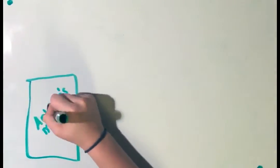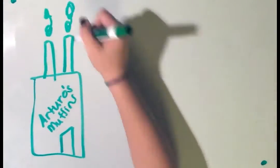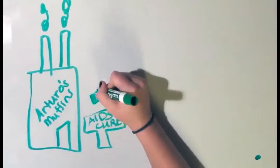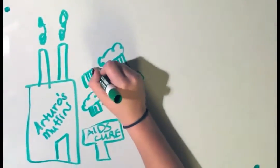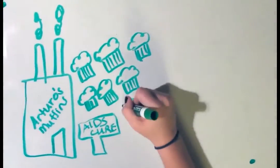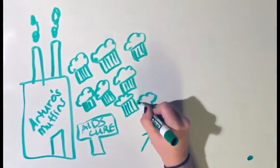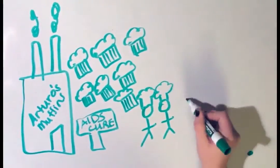So, let's take the scenario of Arturo's Muffin Factory. If the government realized that Arturo's Special Ingredient cures AIDS, then the demand for Arturo's Muffins would increase. When the demand for Arturo's Muffins increases, Arturo demands more muffin bakers.